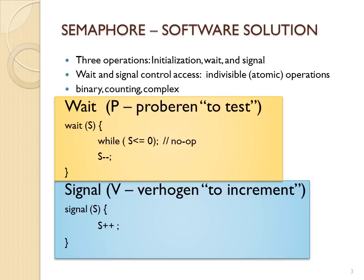There are different types of semaphores: binary semaphores and counting semaphores. A binary semaphore can only have two values — zero and one. A counting semaphore can have multiple values. In a standard semaphore, while processes wait they sit there checking the semaphore repeatedly using CPU cycles, which is called busy waiting.